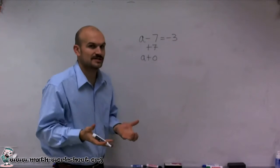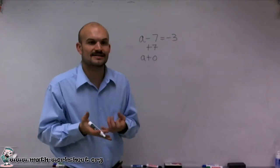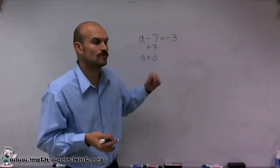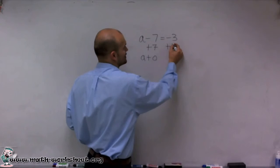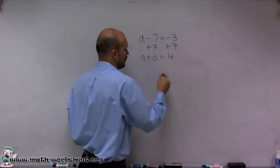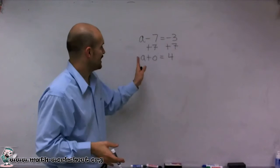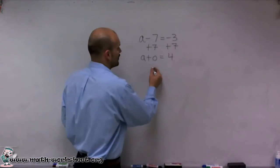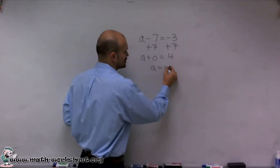But with an equation, it's important that an equation is a statement of equality, meaning the left side has to equal the right side. So I'm going to have to make sure I add 7 to the right side. Therefore, negative 3 plus 7 equals 4. Now in the statement, I have a plus 0 equals 4, where I can simply just say a is equal to 4.